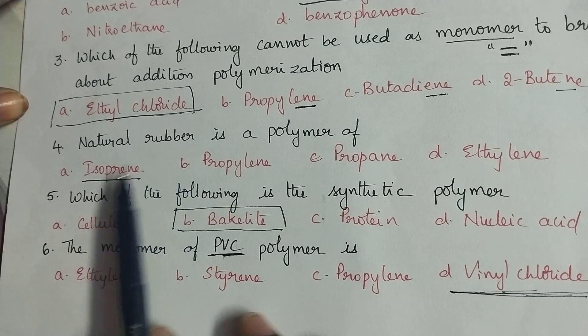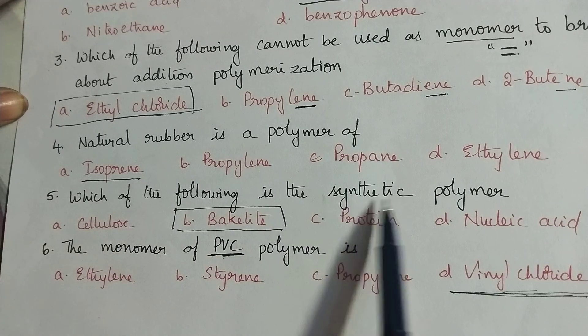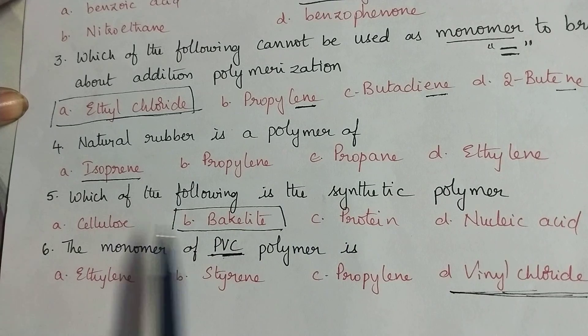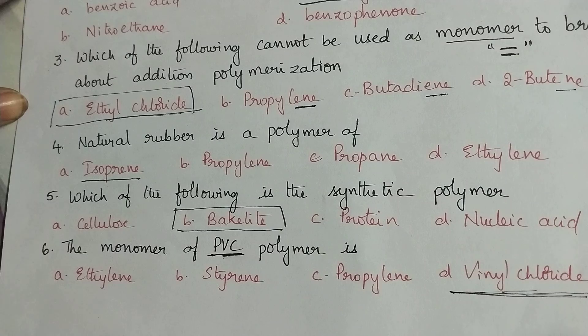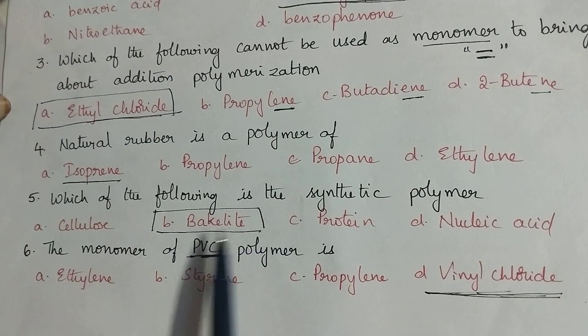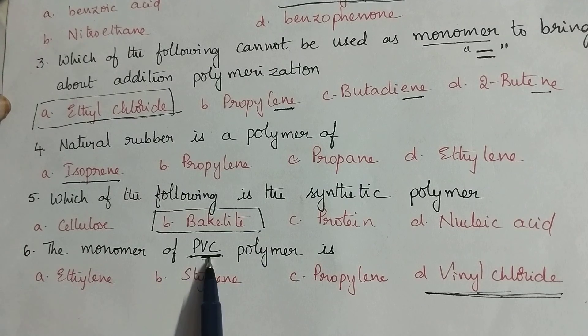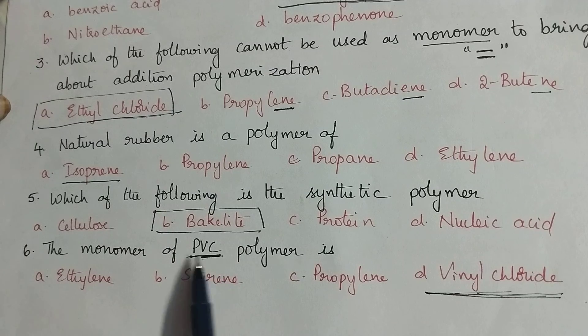Which of the following is the synthetic polymer? Cellulose, proteins and nucleic acid comes under natural polymers, so bakelite is the synthetic polymer.